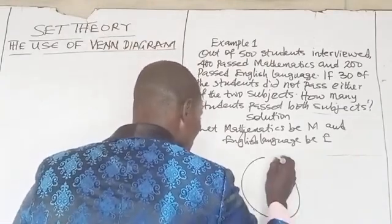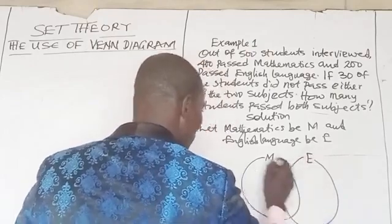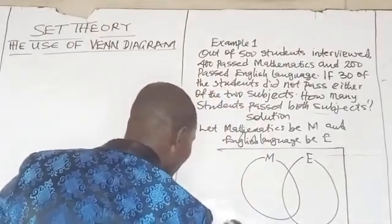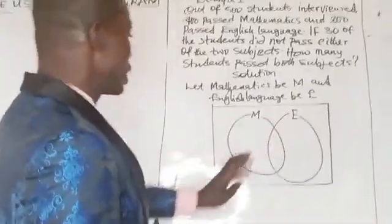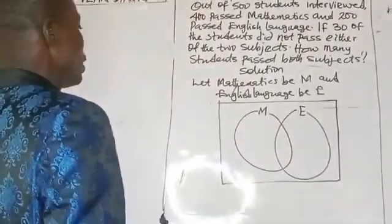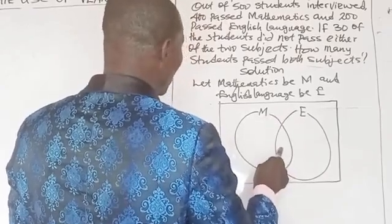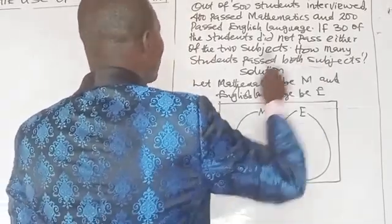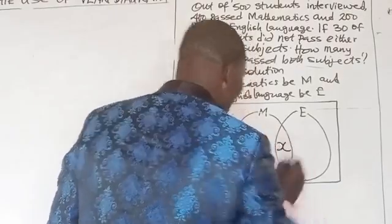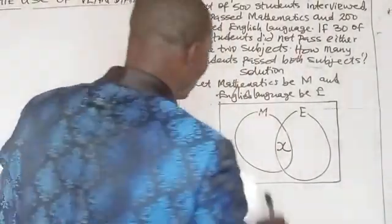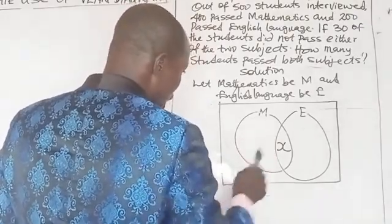Now let's draw a Venn diagram. This circle is for mathematics, and this one is for English language. This is the universal set — the rectangle region. Following step one, the Venn diagram is properly labeled. The next step is to identify the intersection region. Since we don't know how many students passed both subjects, we represent that intersection by letter X. This region here is for mathematics only, and this region is for English language only.